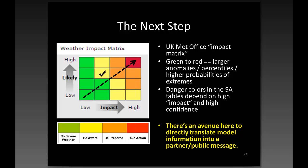One way to translate this information is to look at what the UK Met Office is doing. They use what they call a weather impact matrix, where impact increases from left to right and likelihood or confidence increases from bottom to top. You can think of this as colors of standardized anomaly — when you see very large departures between the ensemble mean and climatology, it really takes a combination of high impact and high confidence. So when you do see these big values, that's your danger area. There's really a way to directly translate model information into a partner or public message, though 'directly' doesn't mean automatically — it still needs to be shaped. But there's definitely an avenue to use ensemble information better to craft a message and extend lead times.